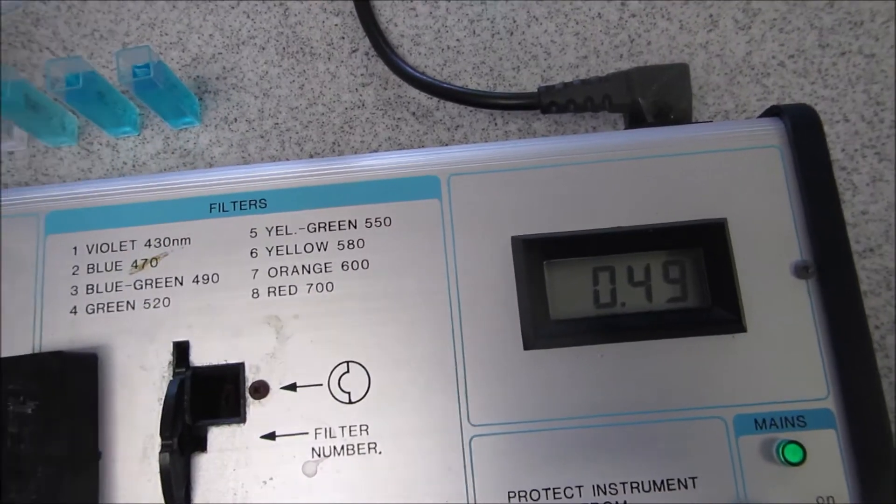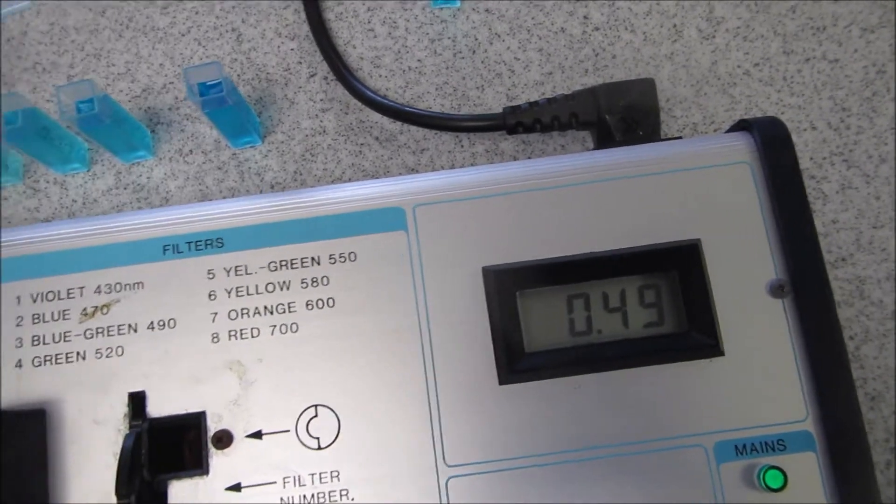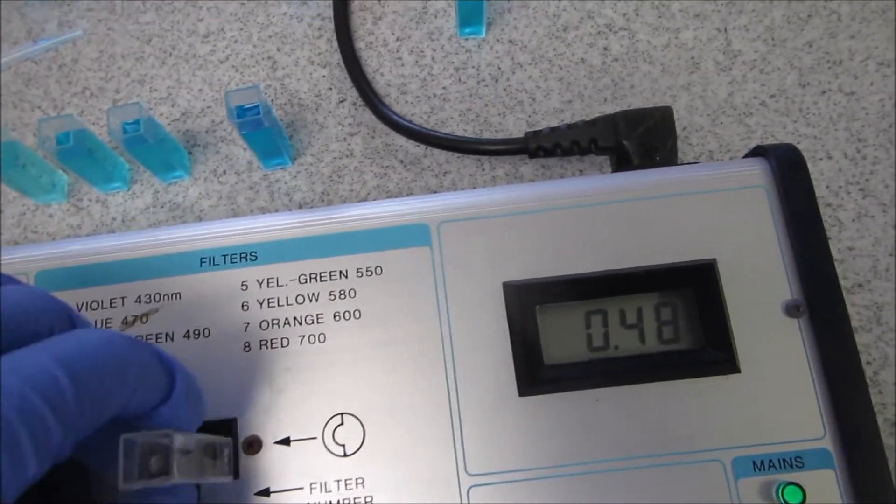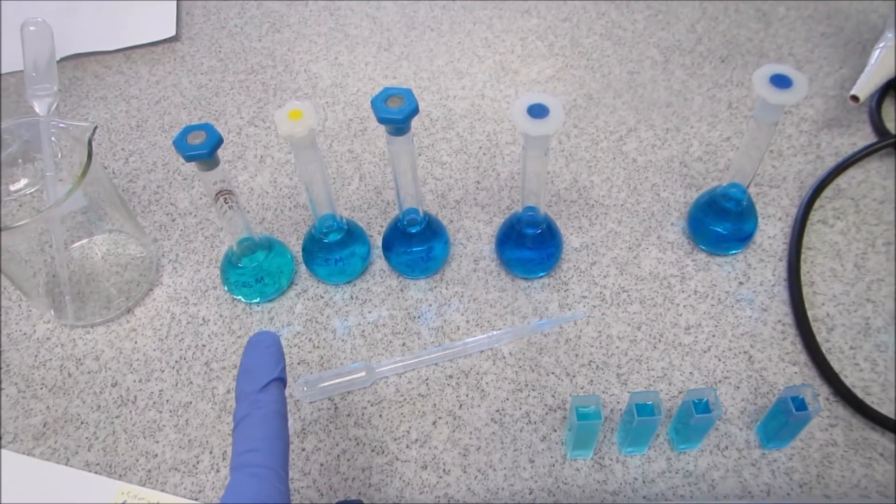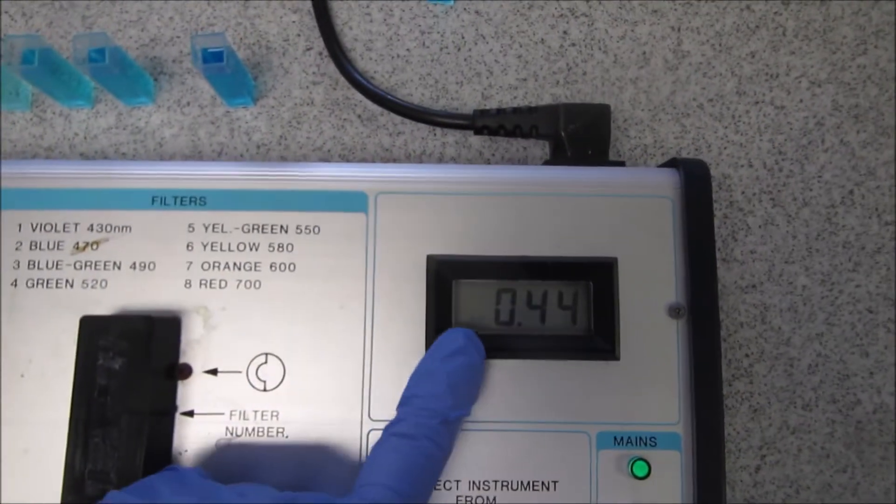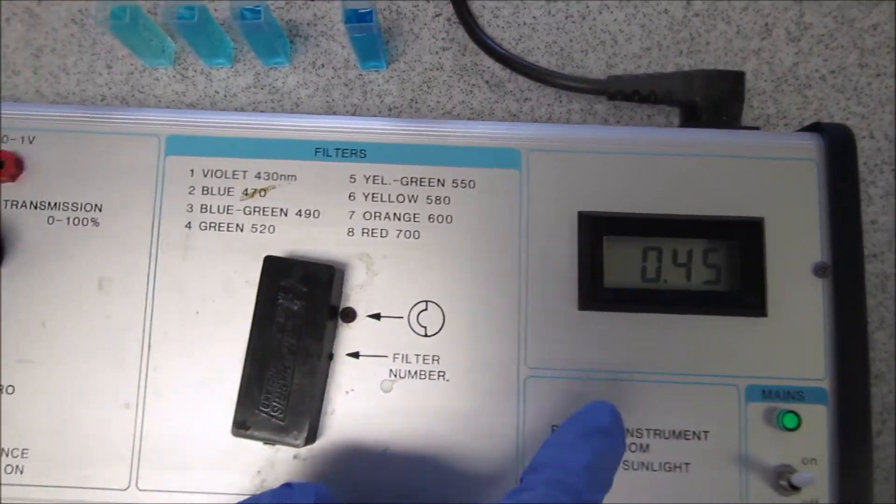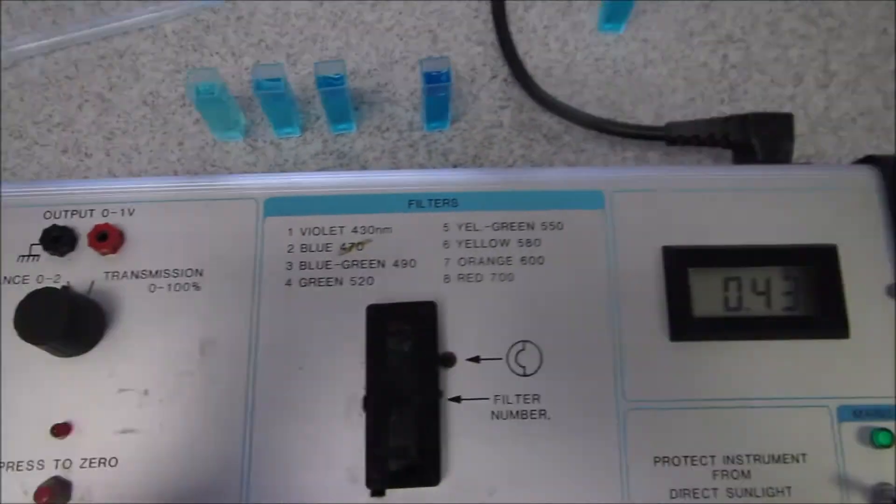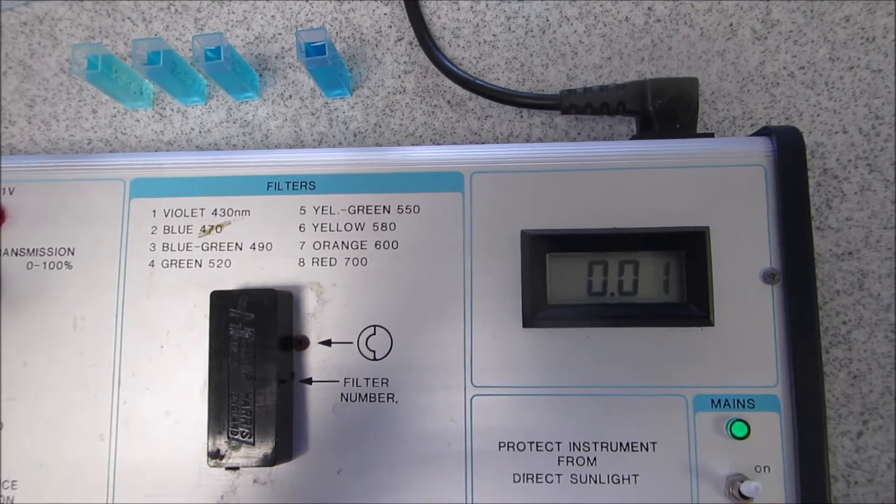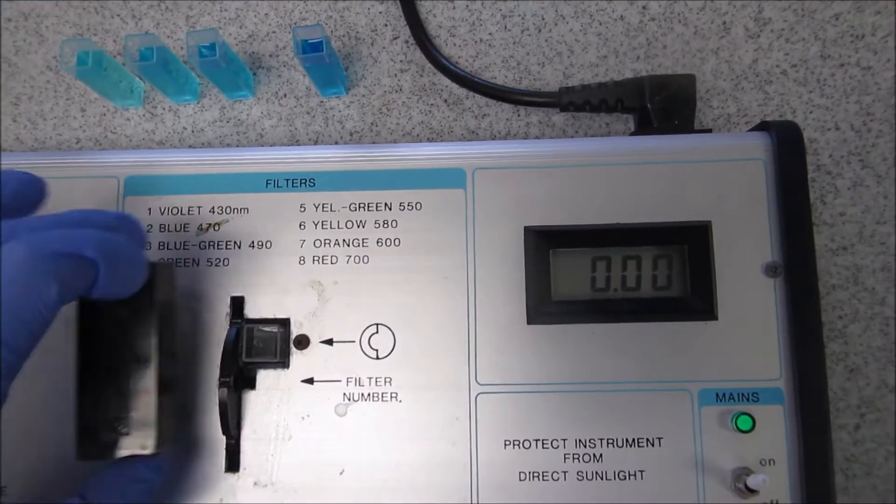First things first, I've got a blank which is deionized water, because when I was making up the copper sulfate solutions I used deionized water to dilute them. I'm putting in my deionized water and you can see there's a reading on the wavelength. I'm just going to hit zero and once it comes down to zero, that's essentially the machine blank.